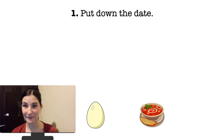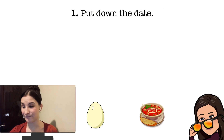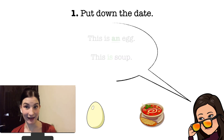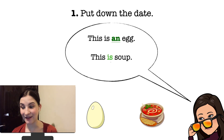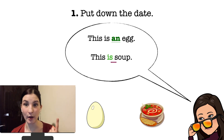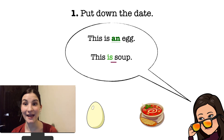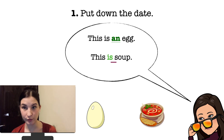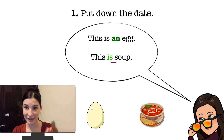What can you see? This is an egg and this is soup. Why do I say an egg? Because it's countable, it's one, and it starts with the vowel sound 'e'. Why do I say this is soup? Because soup is uncountable, so I don't use 'a' or 'an'.